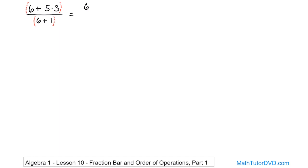So on the top, you would have six plus five times three is 15. Now on the bottom, separately, this is totally separate from what's going on the top. You have this set of parentheses. You can just do what's inside of it, which is six plus one, giving you seven.